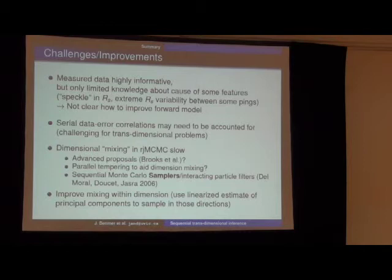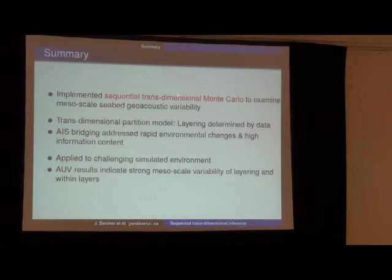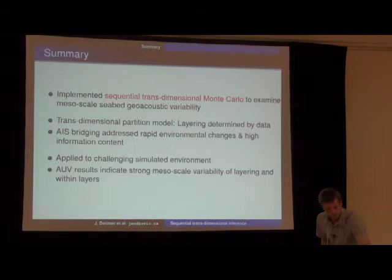So with that, I'll just jump to the summary here. We implemented the sequential trans-dimensional Monte Carlo scheme to examine mesoscale geo-acoustic variability. It's work in progress. We're using reversible jump Markov chain to determine the layering structure along the track and use AIS to address rapid changes that may sometimes occur in the environment. We applied this to a challenging simulated environment. However, it seems it wasn't challenging enough, because the measured data is quite complicated. Okay, thanks. Thank you. Any questions?